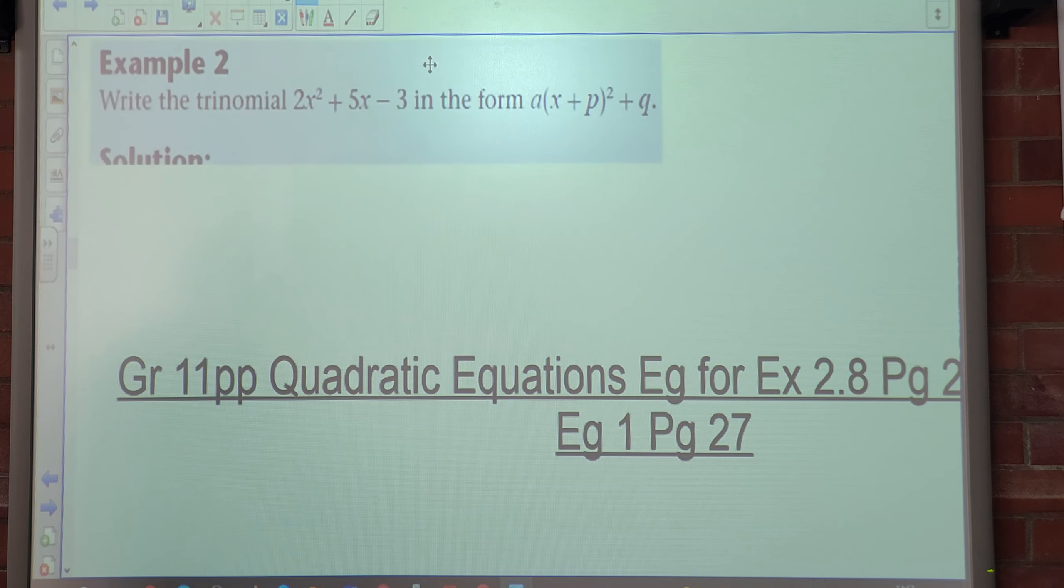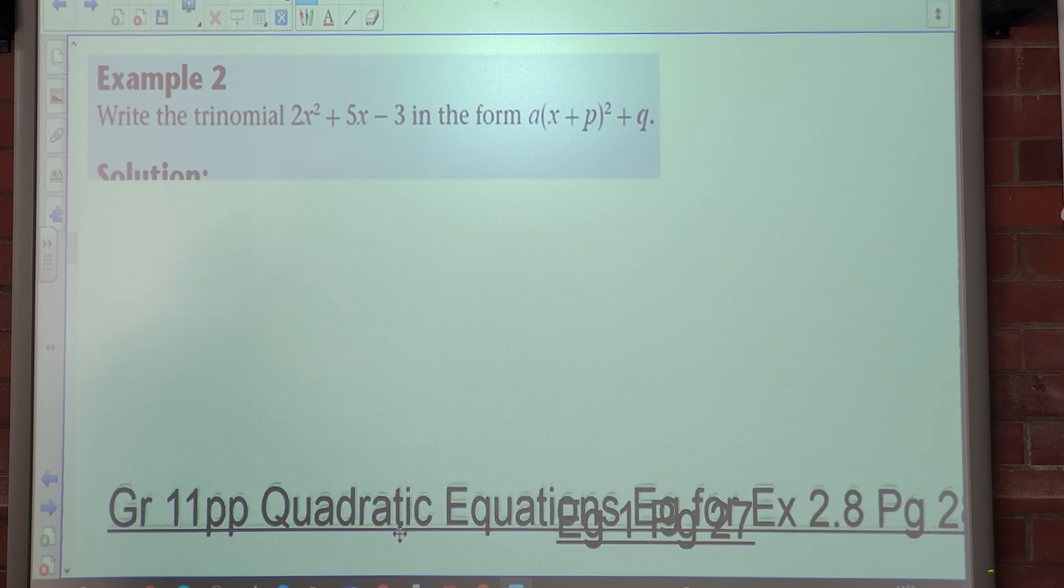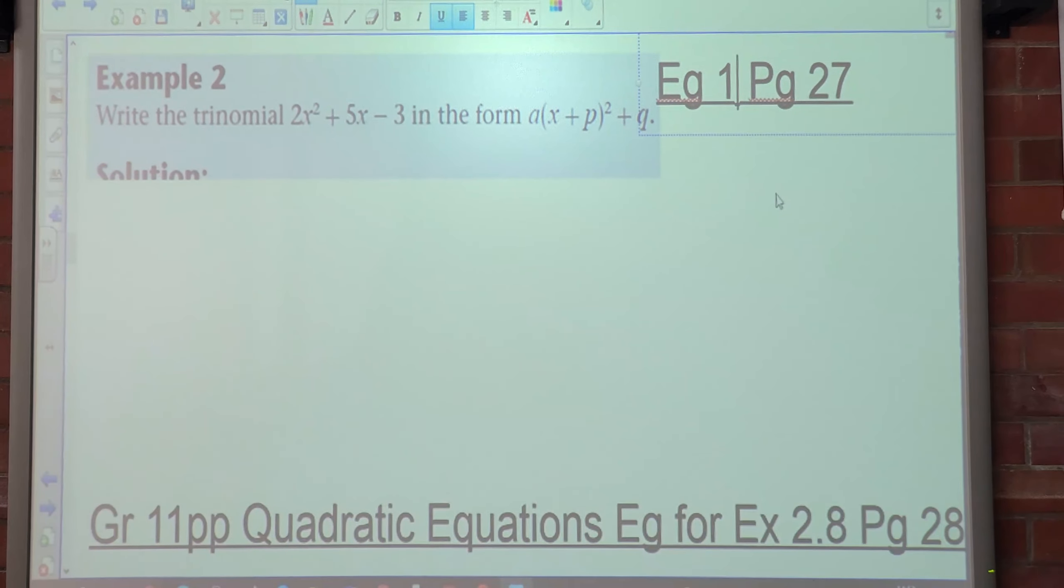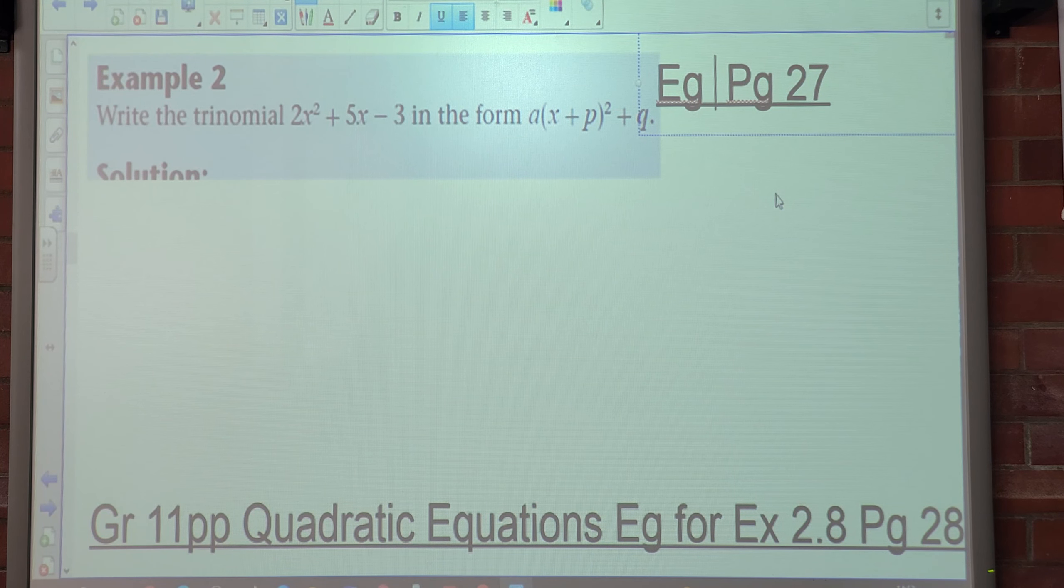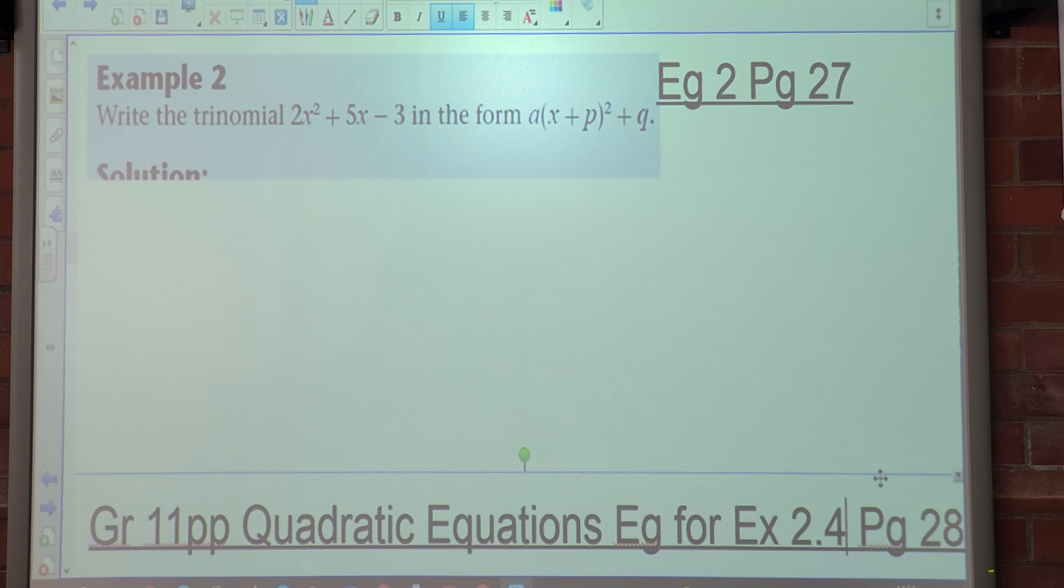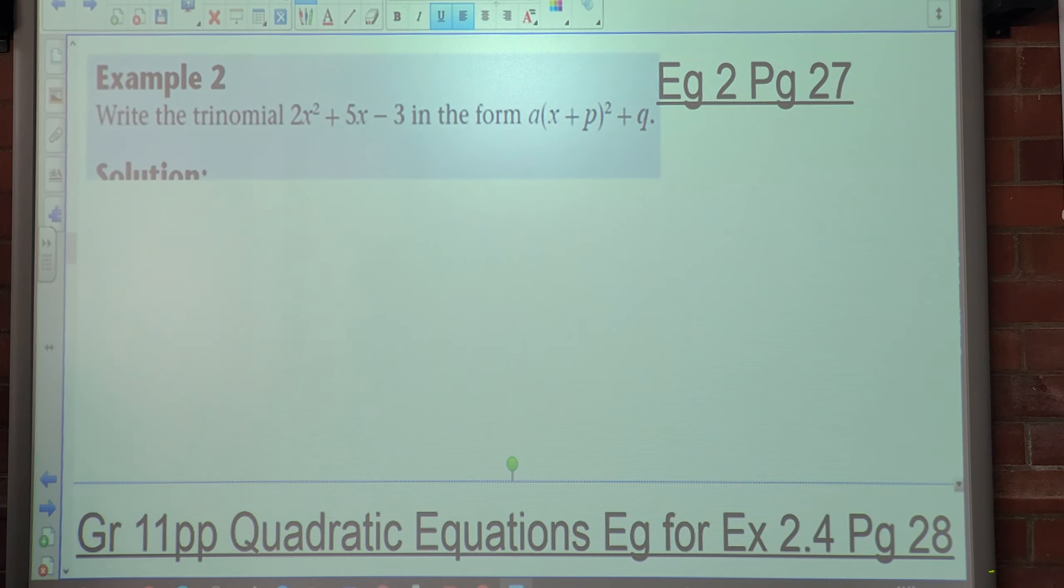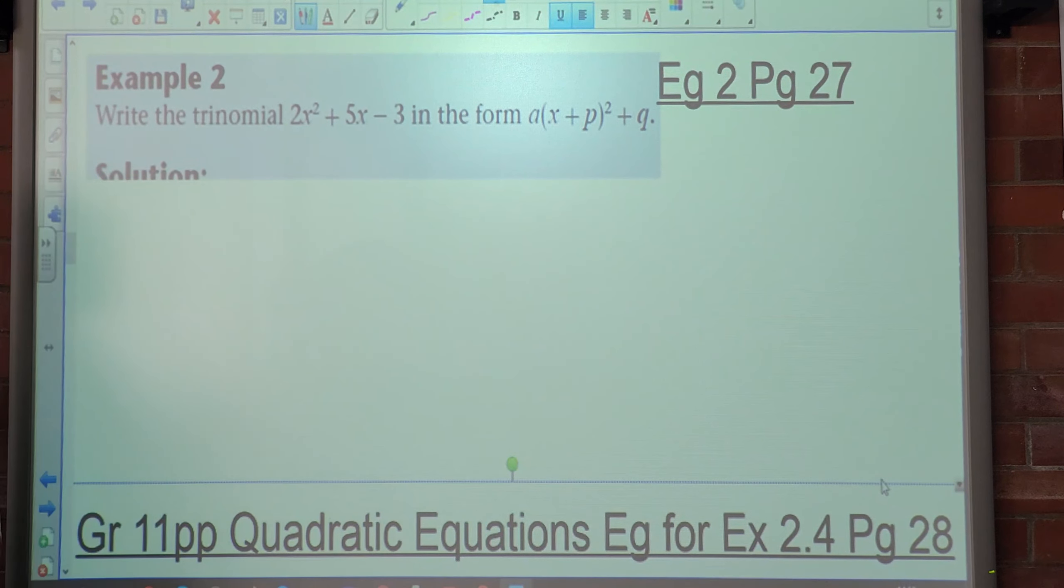Example 2. Example 2 is on page 27. And this is for exercise 2.4. People, question 2 is, write the trinomial 2x² + 5x - 3 in the form a(x + p)² + q. So again, what do we have to do first? We must get the coefficient of 1 in front of x squared.